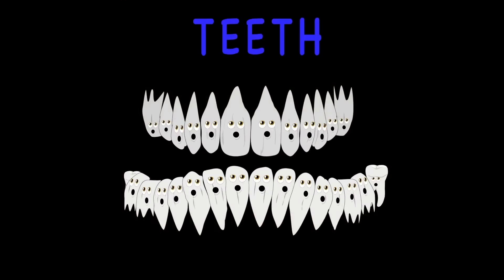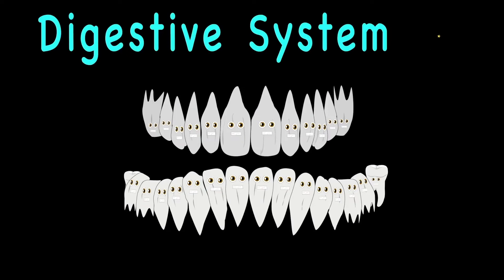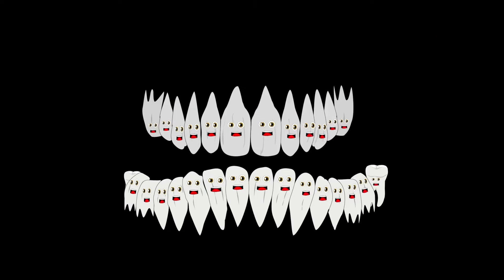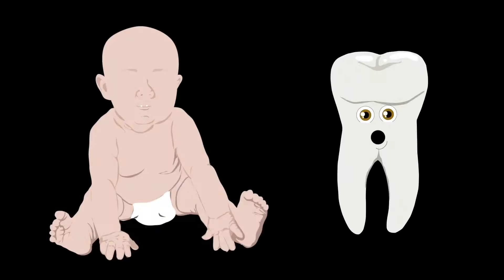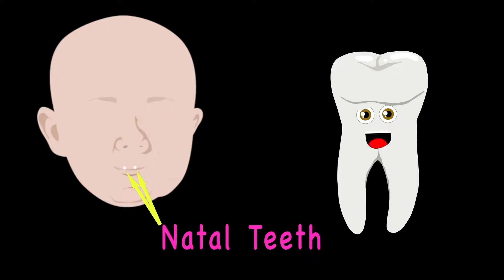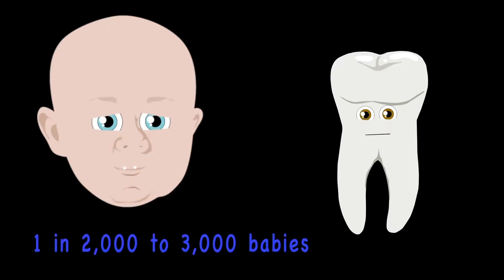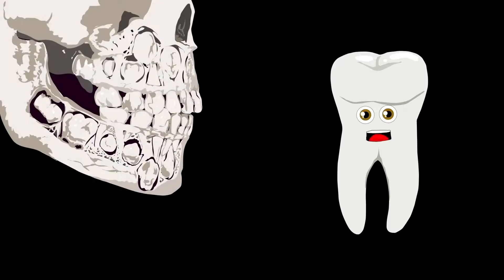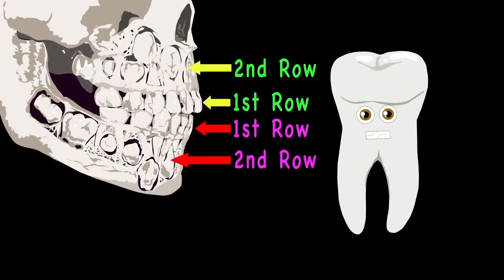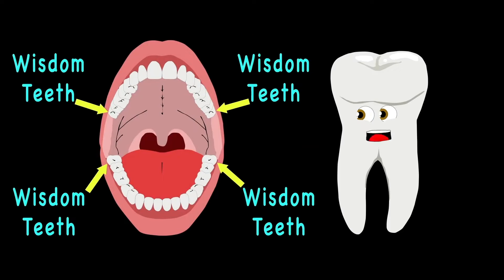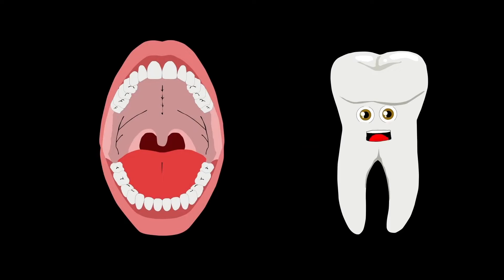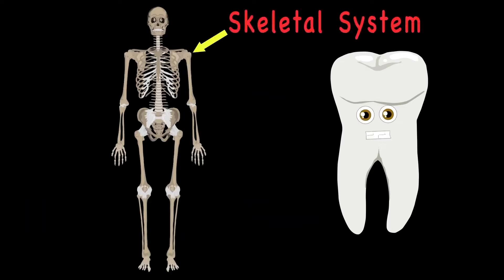We're your teeth — your digestive system star. We hope you listen well and learn just who we are. When you're a newborn baby, you may have natal teeth — this only occurs in 1 in 2,000 to 3,000 babies. A child's mouth has two rows of teeth on the bottom and top, but you only see 20 before the adult teeth make the swap. You'll have 32 adult teeth by the young age of 13, but there are only 28 without your wisdom teeth. Teeth are part of the skeletal system, though they are not bone — we play a key role in digestion to chew foods.